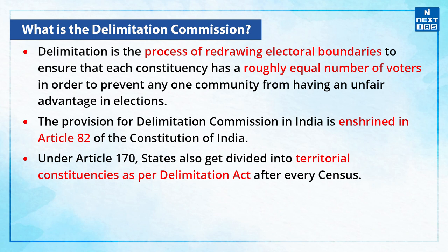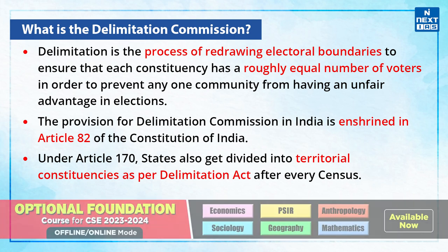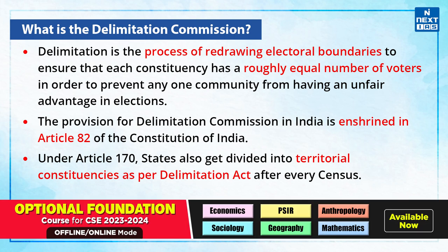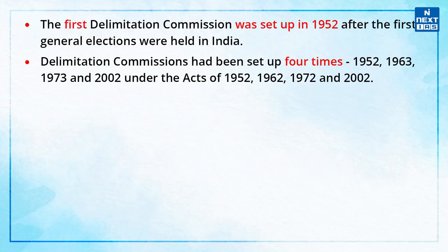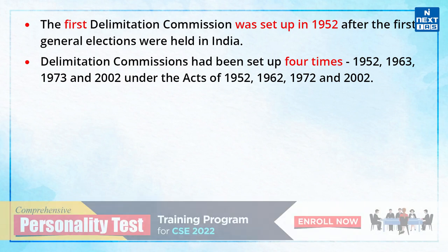The provision for delimitation commission in India is enshrined in Article 82 of the Constitution of India. Also, under Article 170, states also get divided into territorial constituencies as per the Delimitation Act after every census. The first delimitation commission was set up in 1952 after the first general elections were held in India. The delimitation commissions have been set up four times, that is in 1952, 1963, 73, and 2002 under the Acts of 1952, 62, 72, and 2002.